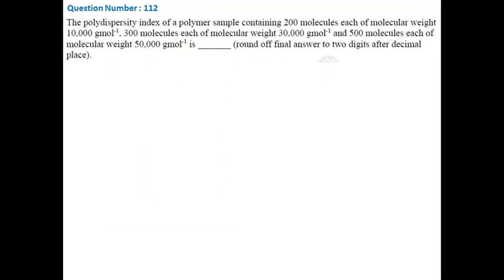In this question, number of chains with a specific molecular weight is given. Like there are 200 chains with 10,000 molecular weight, 300 chains with 30,000, and 500 chains with 50,000 molecular weight. We need to calculate the polydispersity of the polymer. Polydispersity indicates variation in the chain length of the polymer. A polydispersity value of 1 will indicate all chains have same molecular weight. Values higher than 1 indicate variation in chain length and also indicate poor control on polymerization reaction.